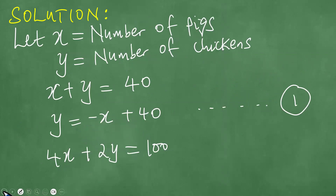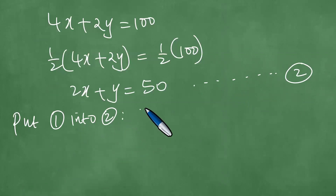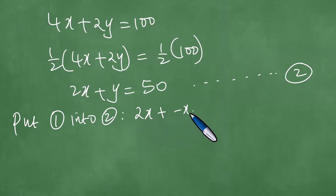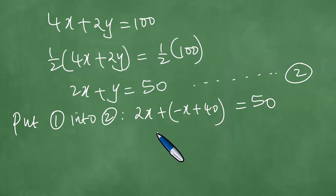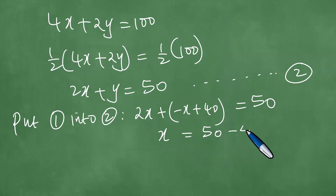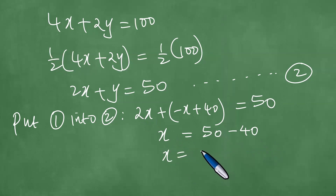We proceed to put equation one into equation two. Equation one is Y equals minus X plus 40. So we have 2X plus Y, substituting Y as minus X plus 40, which equals 50. And we have 2X minus X which is exactly X, so X equals 50 minus 40.